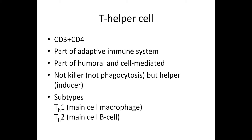The most important fact about the T-helper cell is that it is not a killer. It does not induce phagocytosis by itself — it rather helps and amplifies other cells to induce their functions. There are two major subtypes of T-helper cells: Th1 and Th2, which we'll discuss soon.